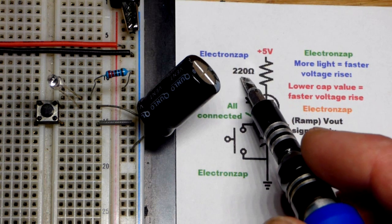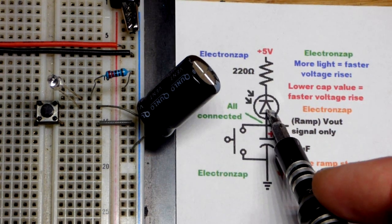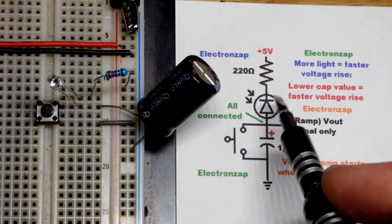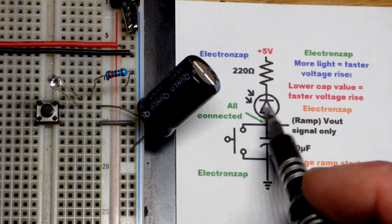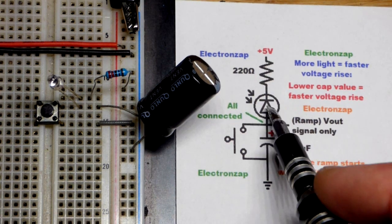So again this sets our maximum current right there. The photo diode lets a certain amount of current go through it based on how much light is falling on it. So it doesn't matter that we already have a resistor here. It's just going to take up some of the voltage.